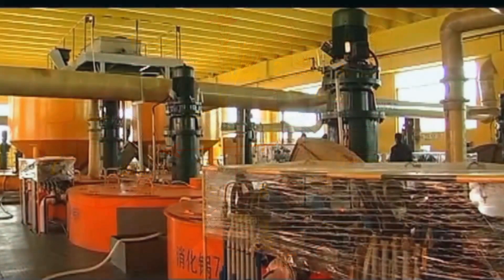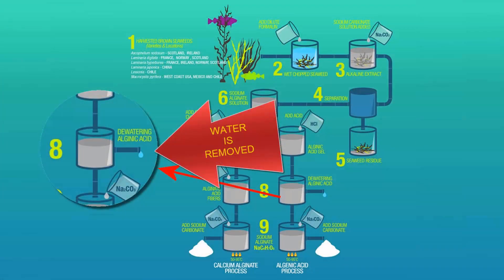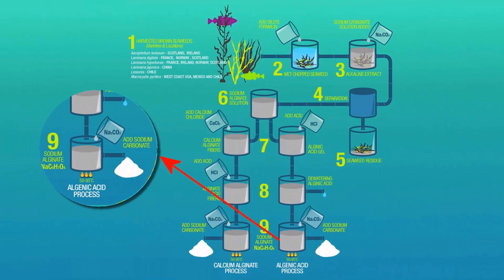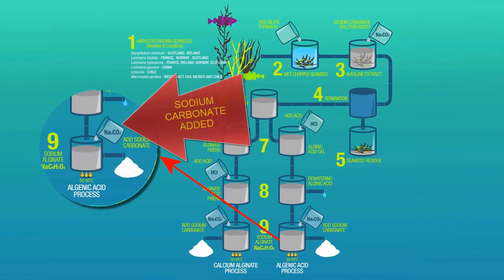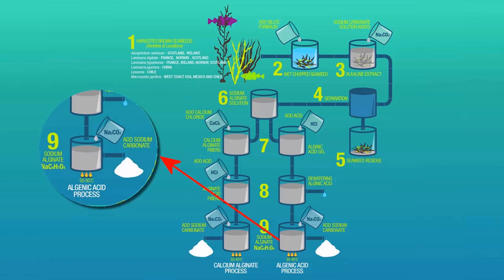In step eight, some of the liquid is evaporated off in the dewatering process. In the last step, sodium carbonate is added and the resulting mixture is heated to 50 to 95 degrees Celsius to completely evaporate the liquid, leaving behind solidified alginate which is ground to different finenesses depending on customer needs.